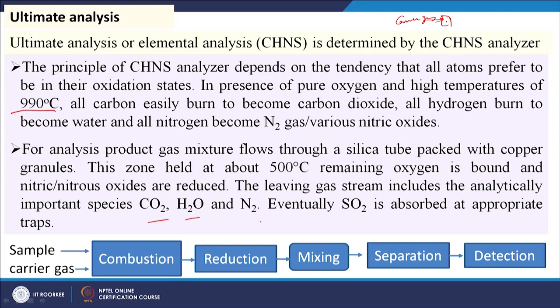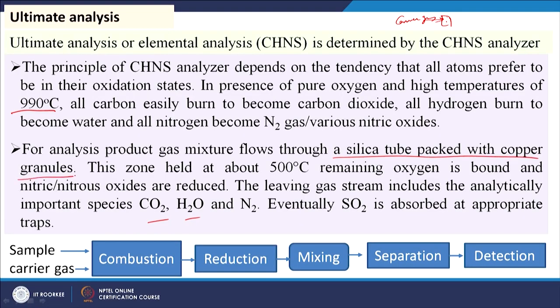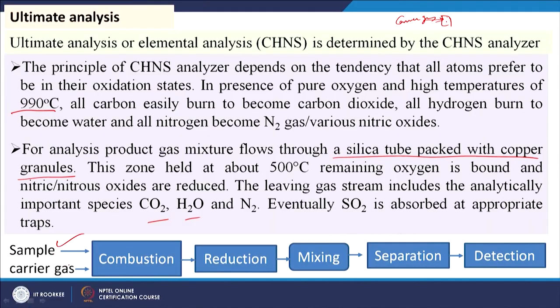We have CO₂, H₂O, N₂, and SO₂. To separate them we need variation in retention time of the different gas molecules in the GC column — that is, their interaction with the stationary phase must be different. NOₓ is reduced to nitrogen prior to entry into the GC column. A silica tube packed with copper granules is used, so the carrier gas along with components passes through it and NOₓ is converted to nitrogen by reduction. Then the mixed gas goes through the separation and detection stage in the GC. The steps are: sample, carrier gas, combustion, reduction for NOₓ, mixing, separation, and detection.